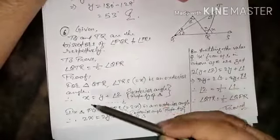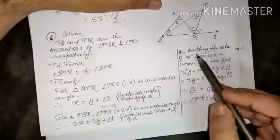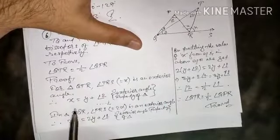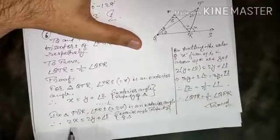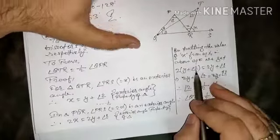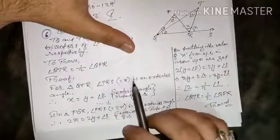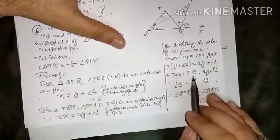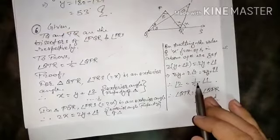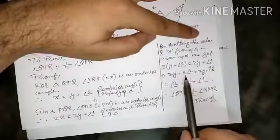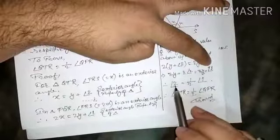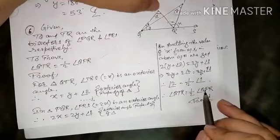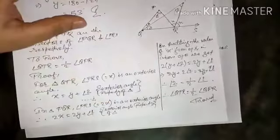Now I substitute the value of X from equation 1 into the above equation. So 2 times (Y plus angle 2) equals 2Y plus angle 1. Distributing the 2: 2Y plus 2 times angle 2 equals 2Y plus angle 1. The 2Y cancels on both sides, leaving 2 times angle 2 equals angle 1. Therefore angle 2 equals half of angle 1. Since angle 2 is QTR and angle 1 is QPR, we have proved that angle QTR equals half of angle QPR.